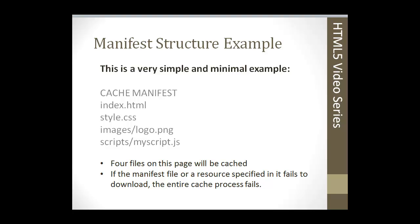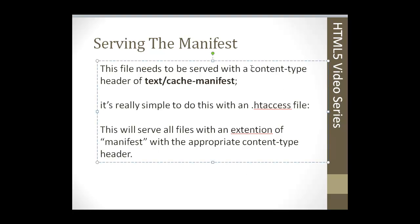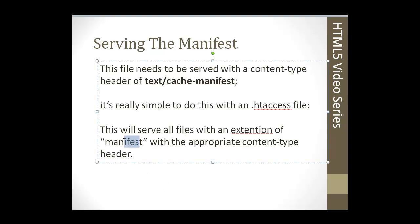If the manifest file fails, the entire cache process fails, so make sure your manifest is in order and structured correctly. For serving the manifest, it must have a content-type header of 'text/cache-manifest'. You add this in your '.htaccess' file on your server, and it will serve all files with an extension of '.manifest' or '.appcache', whatever extension you choose.